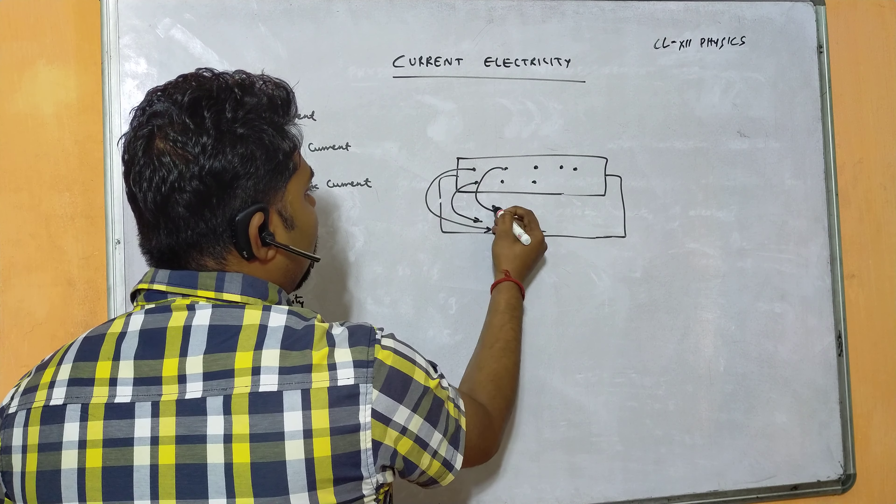For current density: dividing both sides of I = NeAVd by area A, the A terms cancel and we get current density J = NeVd. So the key expressions are: I = NeAVd, Vd = I/(NeA), and J = NeVd. This is a very important derivation for this chapter.